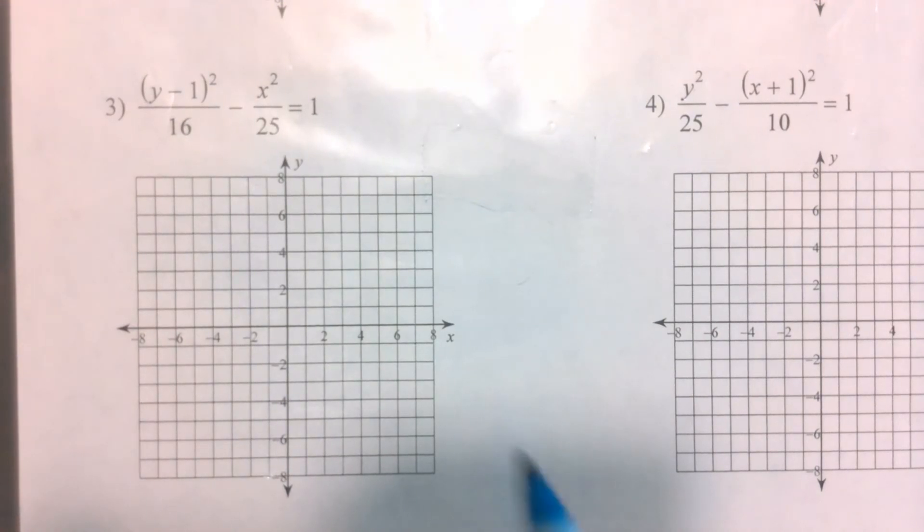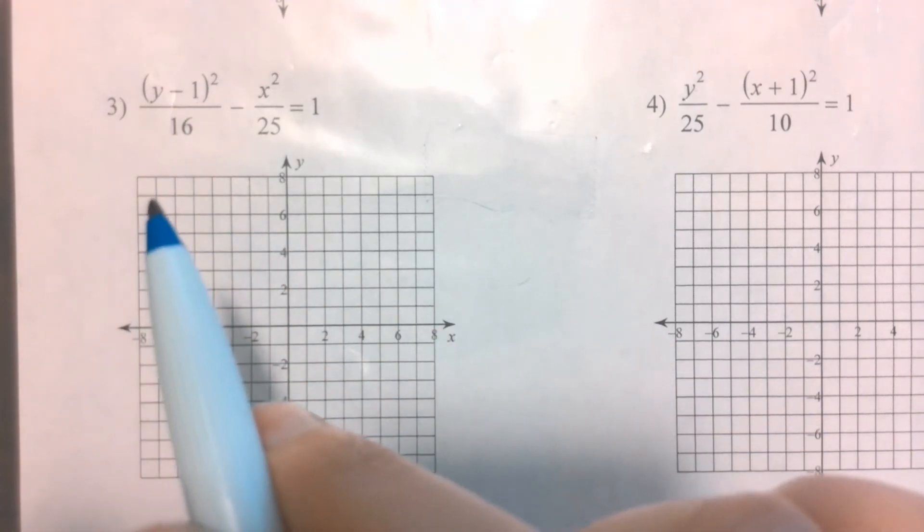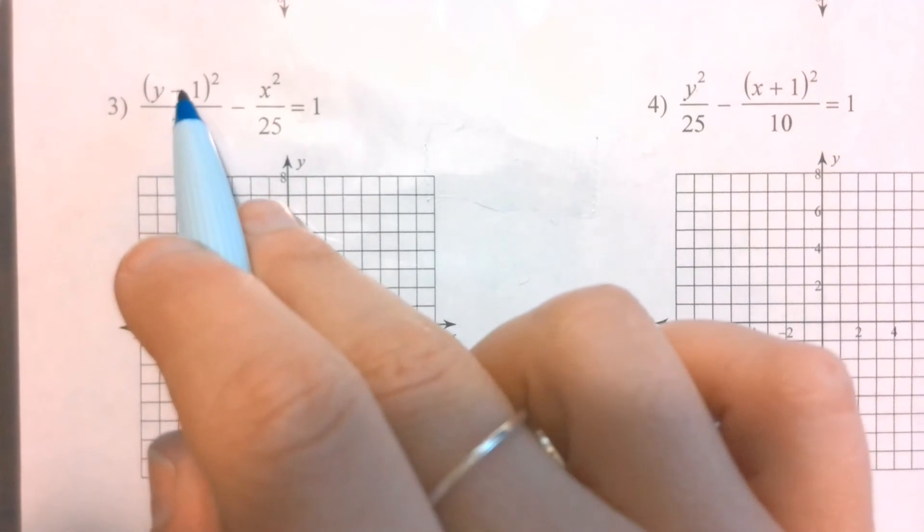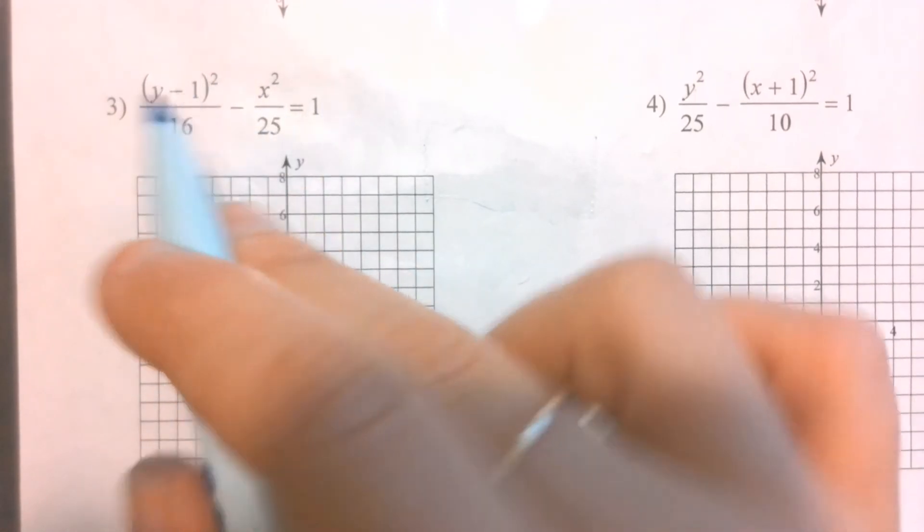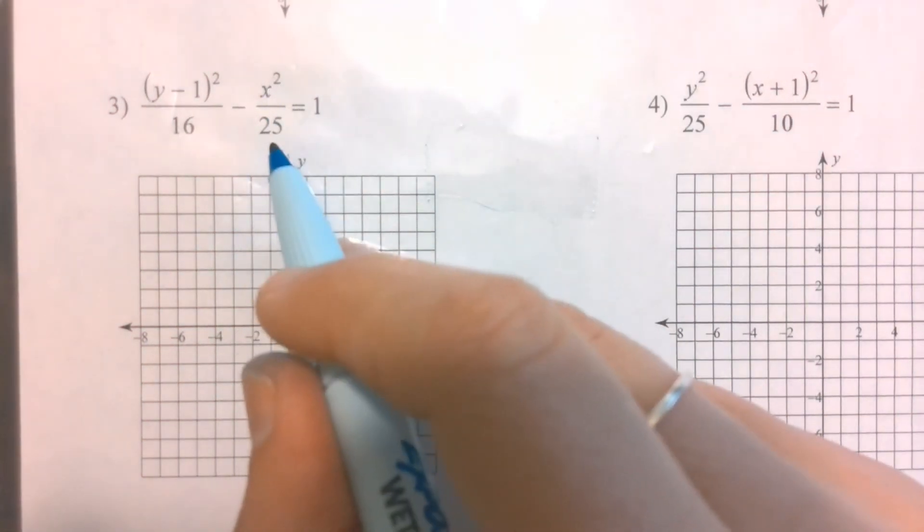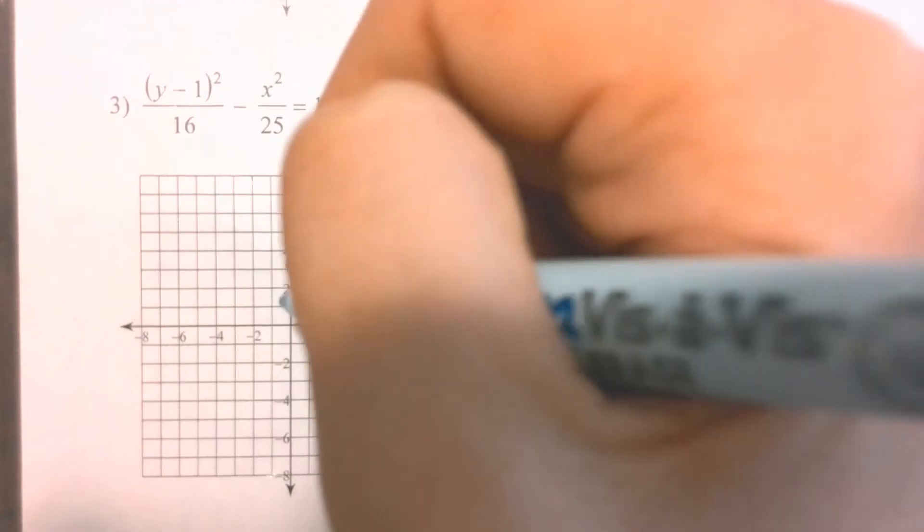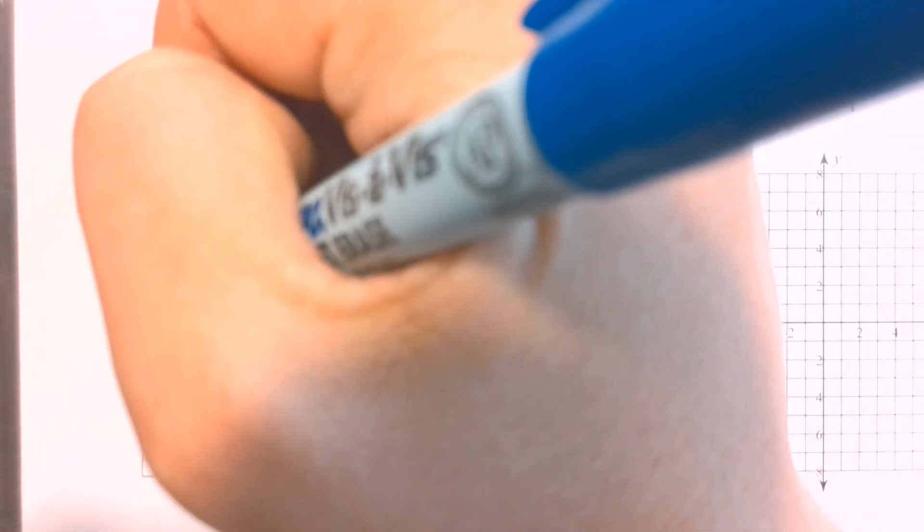For number three, first we notice y is the leading term. So I want to be really careful when choosing my center because it's still going to be what's with the x, comma, what's with the y. So I've got (0, 1) as my center. I'm still going to look for what's underneath the x to see how far I'm going to go to the right and to the left. So I'm moving five units to the right, five units to the left.